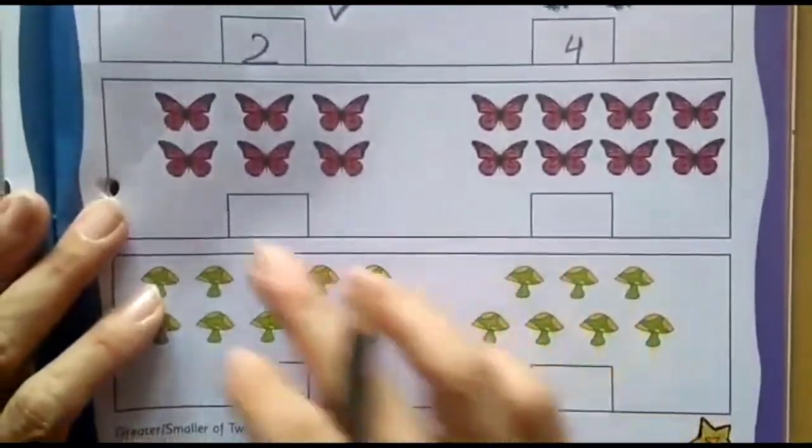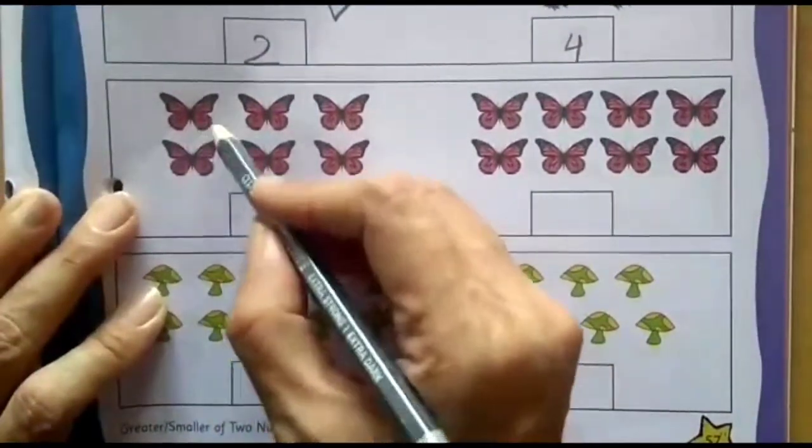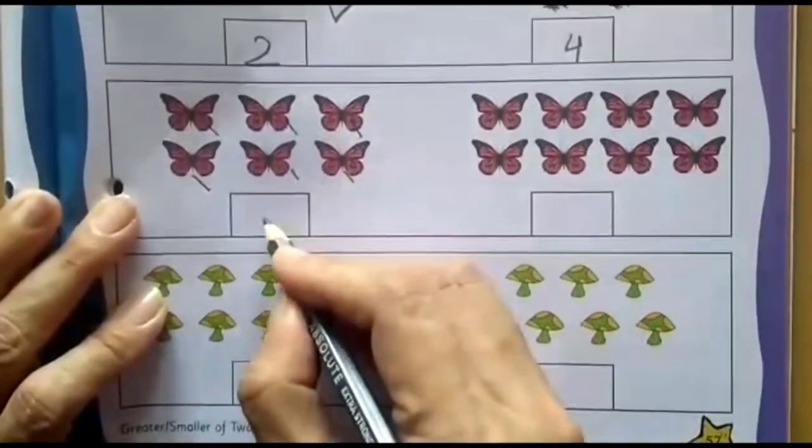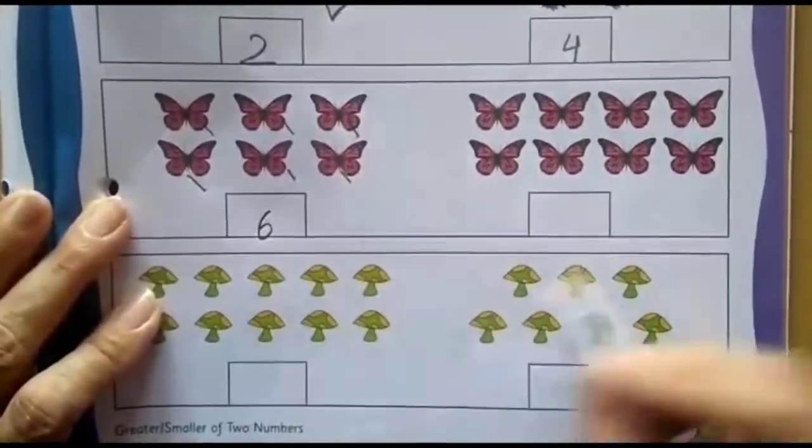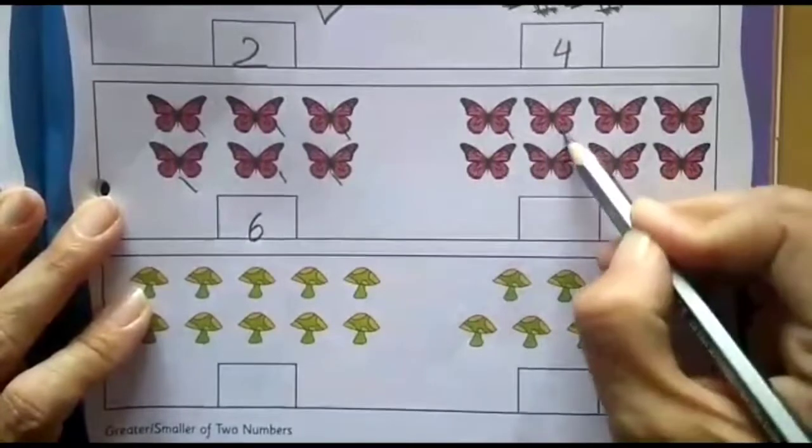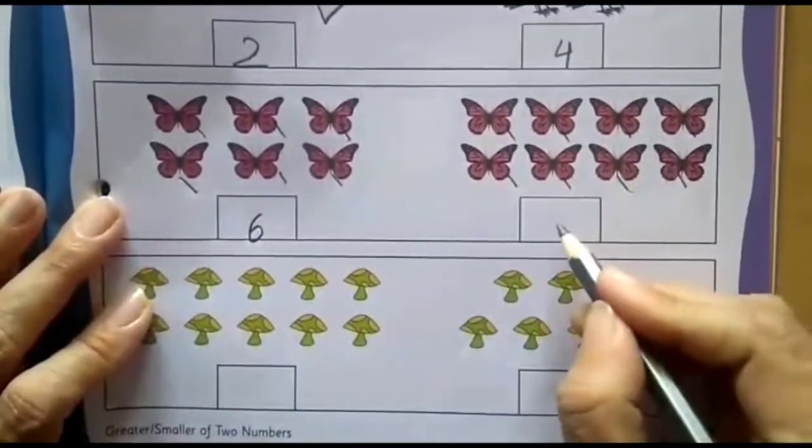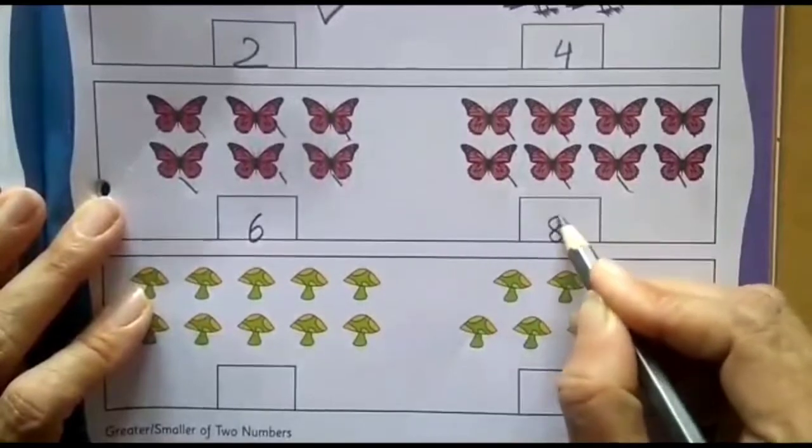Let's move on to the butterflies. How colorful they are. Let's count. 1, 2, 3, 4, 5 and 6. And here number 6 will come. And here 1, 2, 3, 4, 5, 6, 7 and 8. So here number 8 will come.